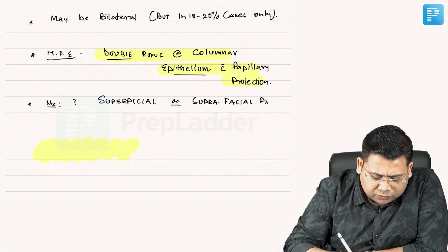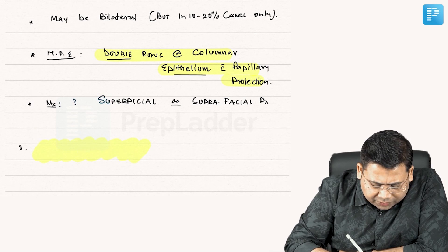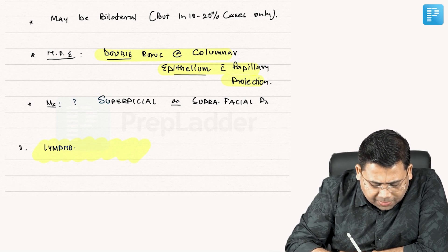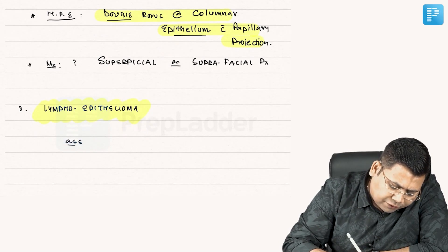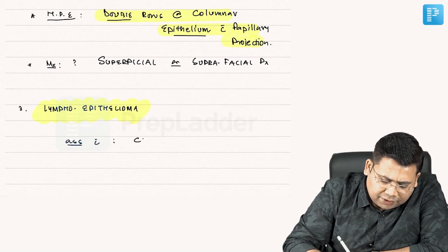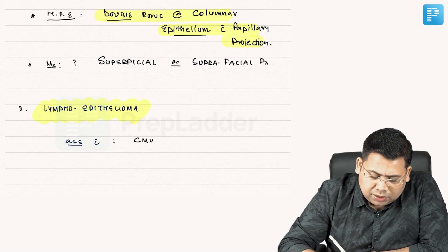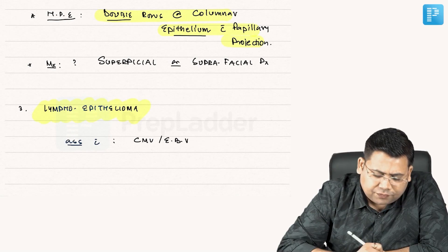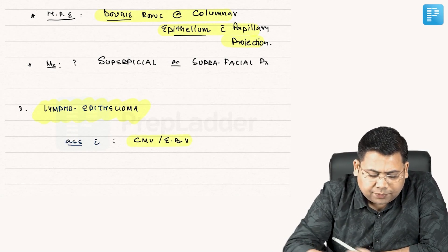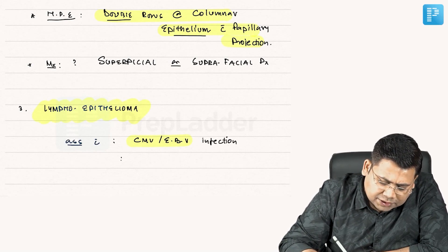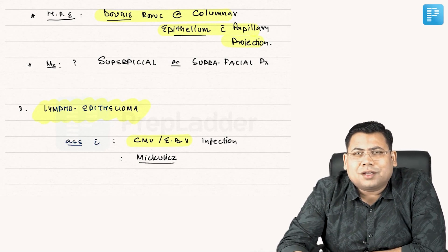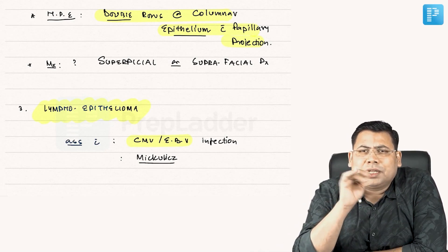The third tumor we are going to talk about is a lymphoepithelioma. This is associated with CMV and Epstein-Barr virus infections. It may also be associated with Mikulicz syndrome, Sicca syndrome, or Sjögren syndrome — a class of similar conditions.